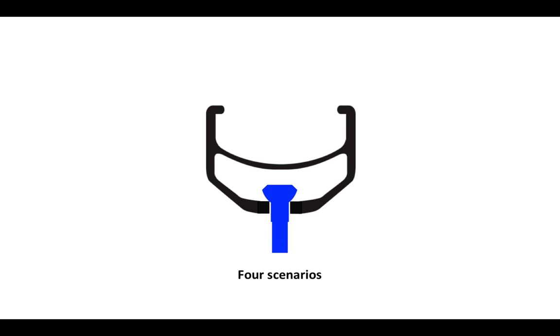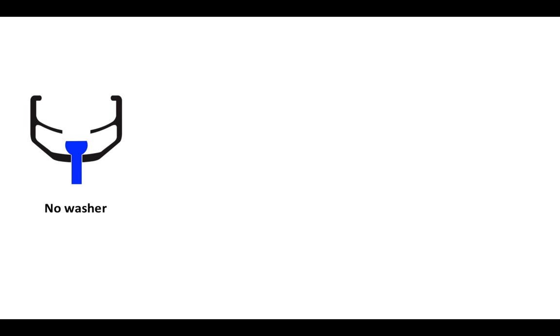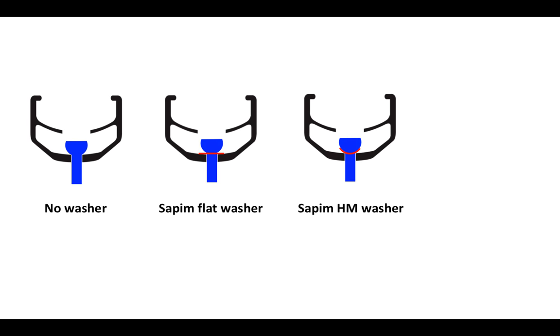We are now going to look at four scenarios in the use of washers. Here we have no washer. Here a Sapim flat washer. Here a Sapim HM washer. Here a Sapim MS washer. We will look and see how we can use these washers to reduce friction and increase the strength of the rim at the same time, starting with looking at reducing friction.